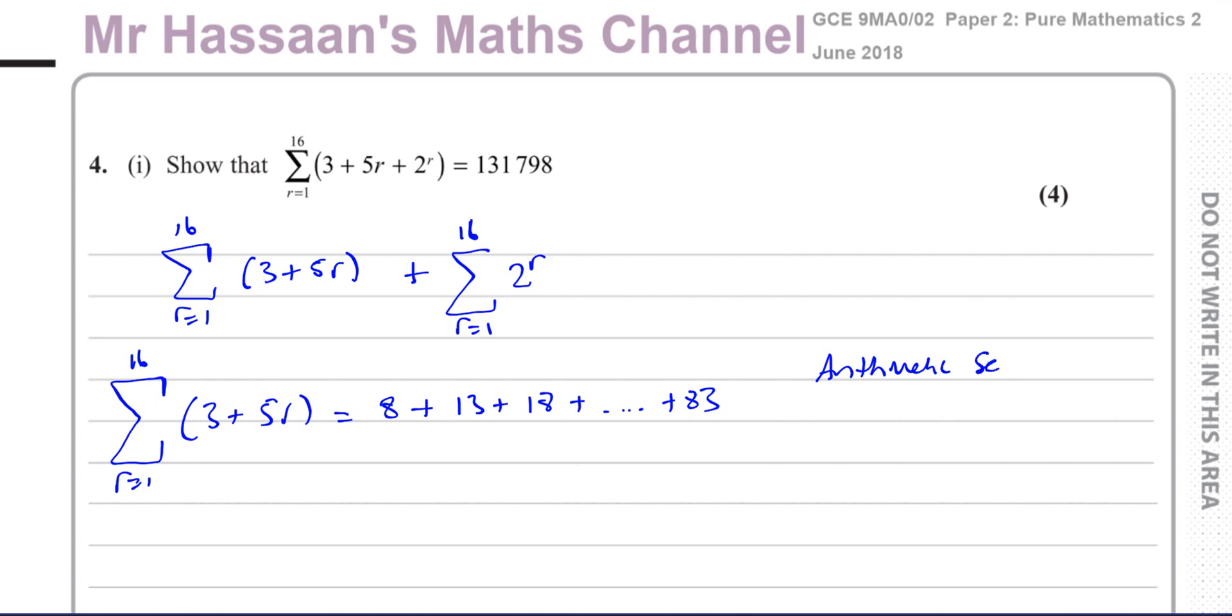This series has a first term of 8, and it has a common difference of 5, and it has a last term of 83, and it has 16 terms. So what that means is we can use this nice formula, Sn equals n over 2 times A plus L. That's a nice, easy formula when we know the number of terms and the last term and the first term.